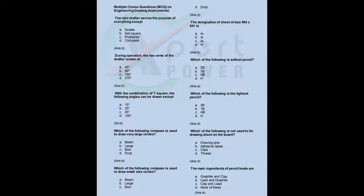Which of the following is not used to fix a drawing sheet on the board? a) drawing pins, b) adhesive tapes, c) clips, d) thread. Answer: D. The main ingredients of pencil leads are: a) graphite and clay, b) lead and graphite, c) clay and lead, d) none of these. Answer: A.